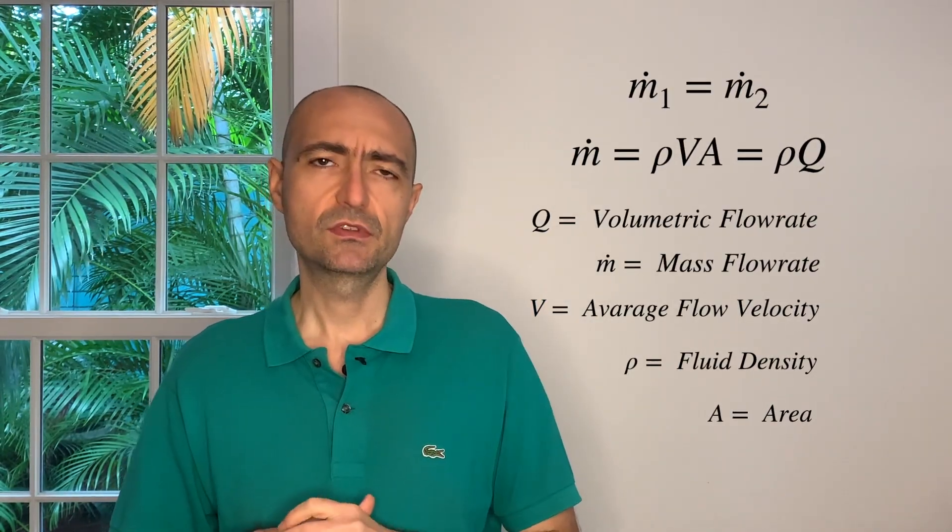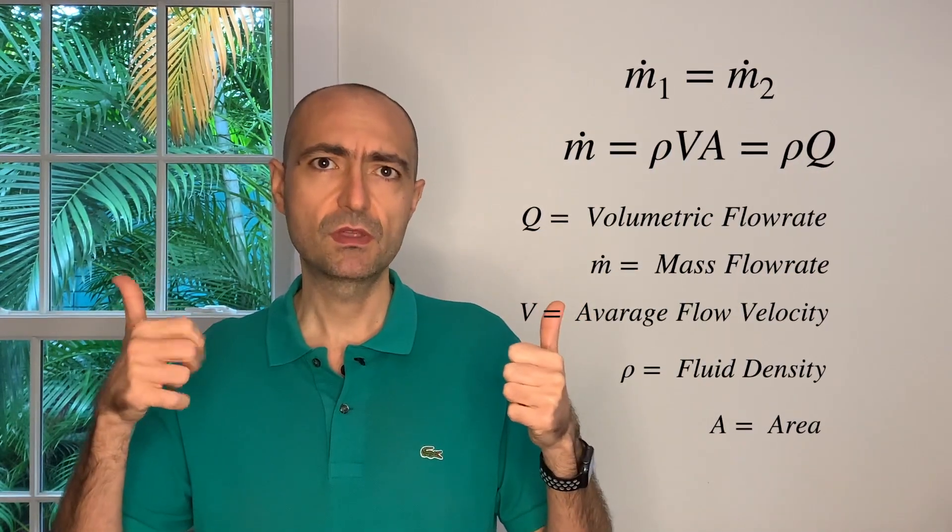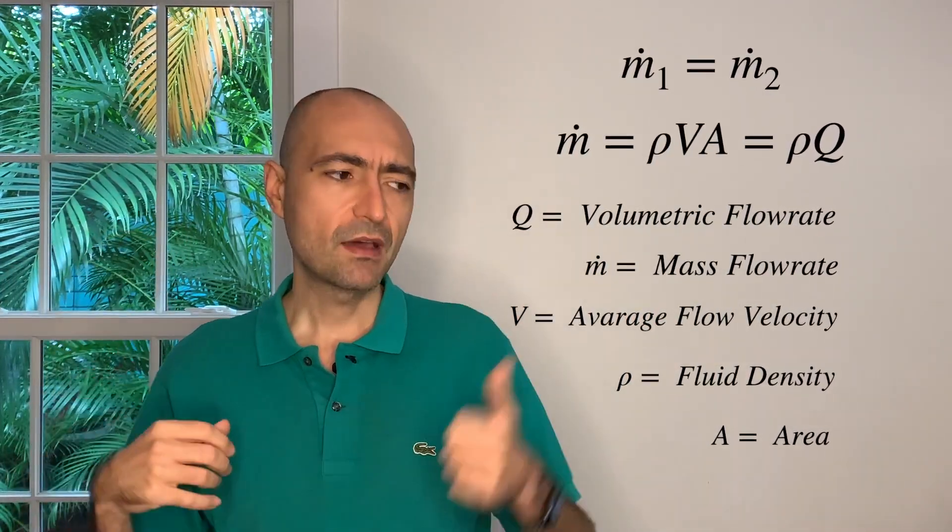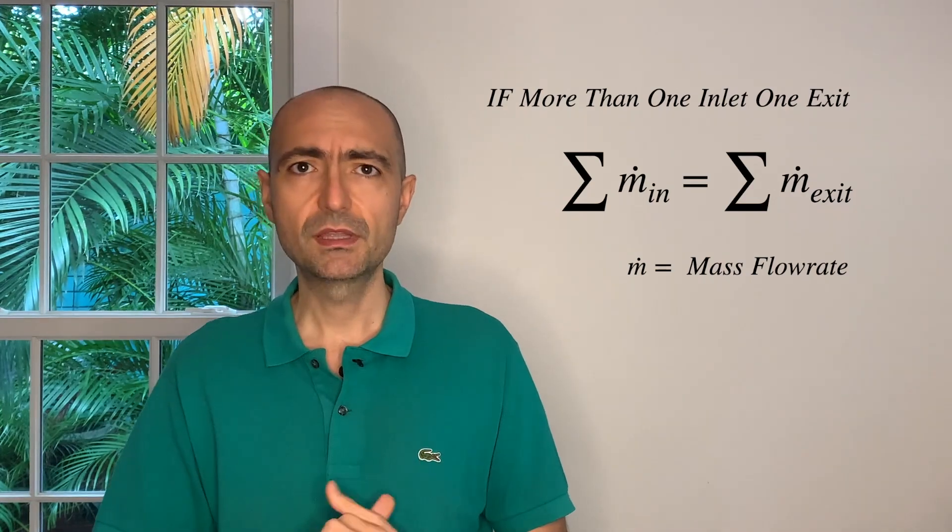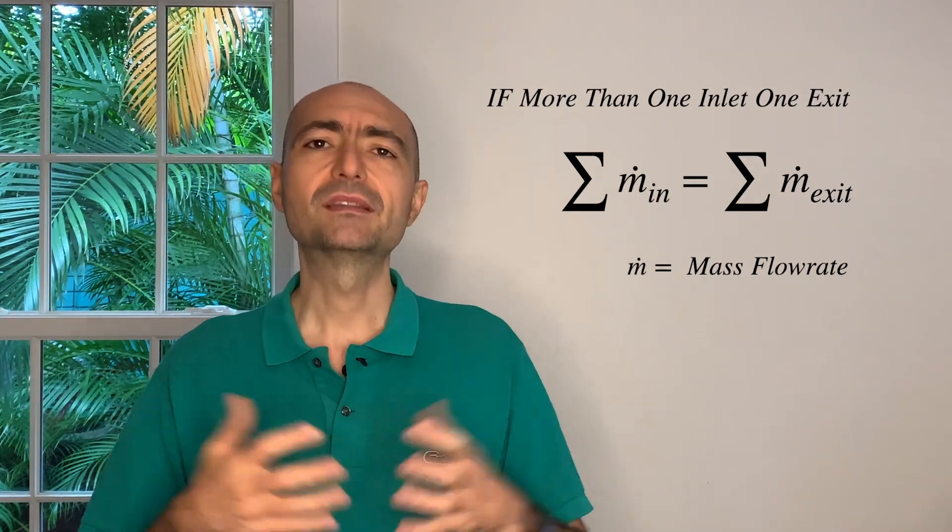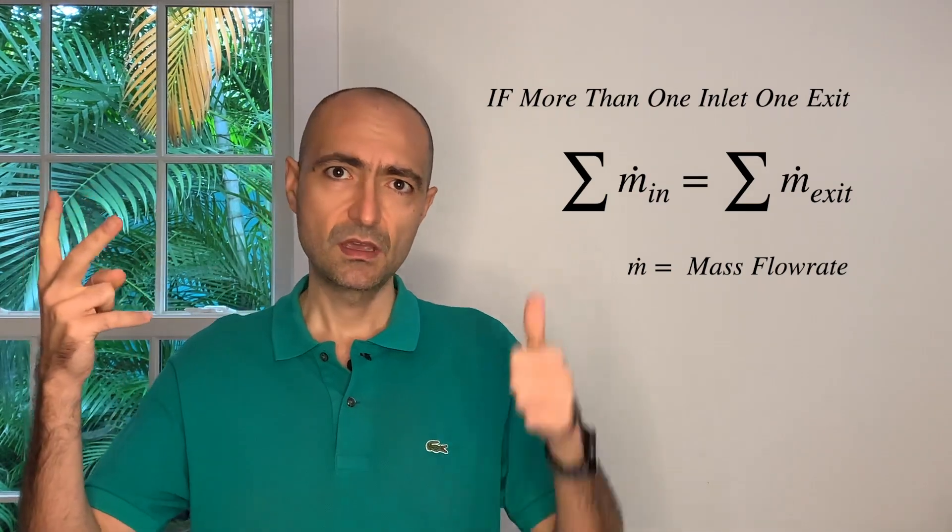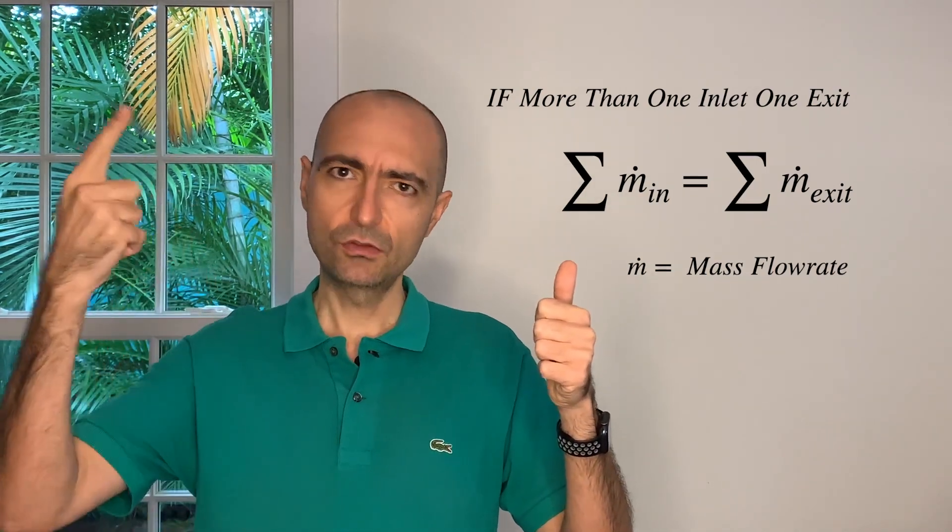One thing to highlight: I looked at real FE exams, and these equations listed in the reference manual are only for one inlet, one outlet. But I have personally seen FE exam questions where there will be multiple exits. So now this equation needs to be modified. I'll write it down for you. I say that the sum of the m_dots at the inlet equals the sum of the m_dots at the exit.